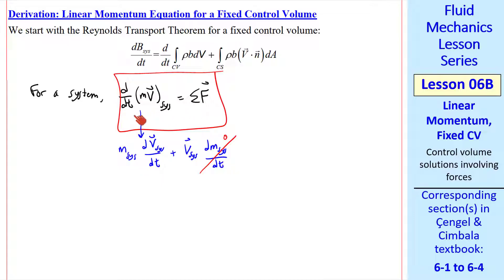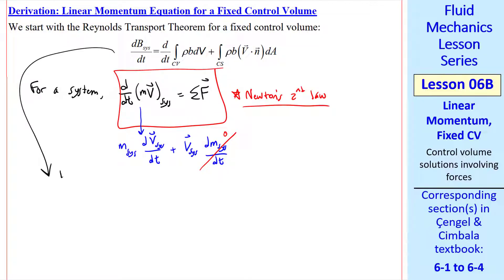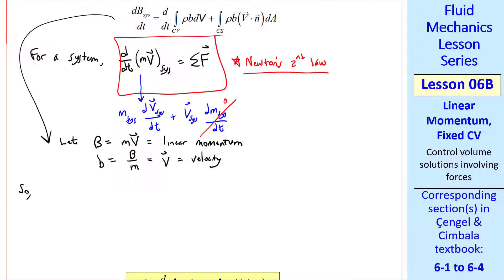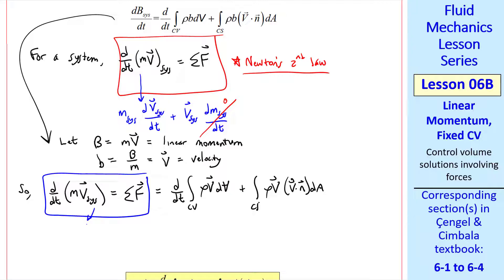So this is really another way of writing Newton's second law. In the Reynolds transport theorem, we'll let capital B equal mv the linear momentum, and so little b is B over m is just v, the velocity. So our RTT becomes d/dt of mv system equals sigma f equal d/dt of the control volume integral of rho v dv plus integral over the control surface rho v v dot nda. Similar to what we've done before, this left part is the system part, and this right part is the control volume part. Sigma f is the same in both of these, since we're talking about the same volume at a particular time, either the system or the control volume.